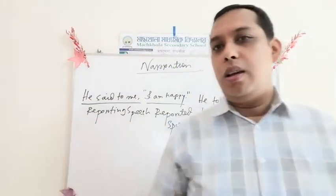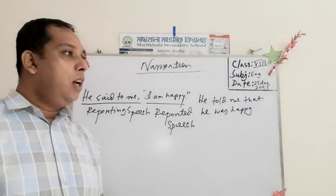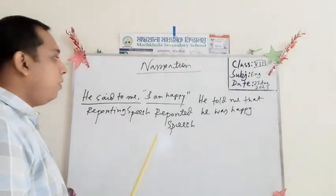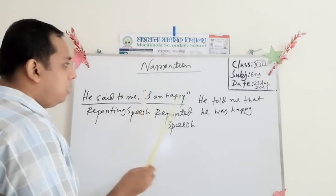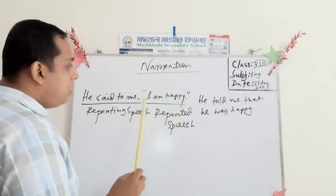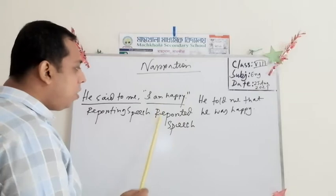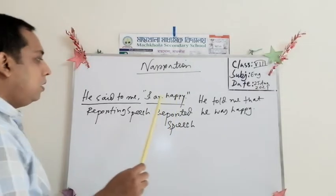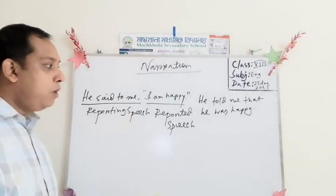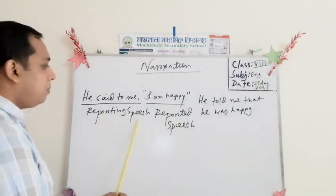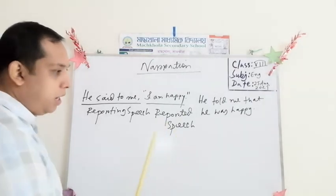I think you have understood. We can easily identify reported speech by looking at the sentence very carefully. Reported speech is always within quotation marks. The whole reported speech is within quotation marks, and the other part outside quotation marks is called reporting speech. Outside quotation marks: reporting speech. Within quotation marks: reported speech.